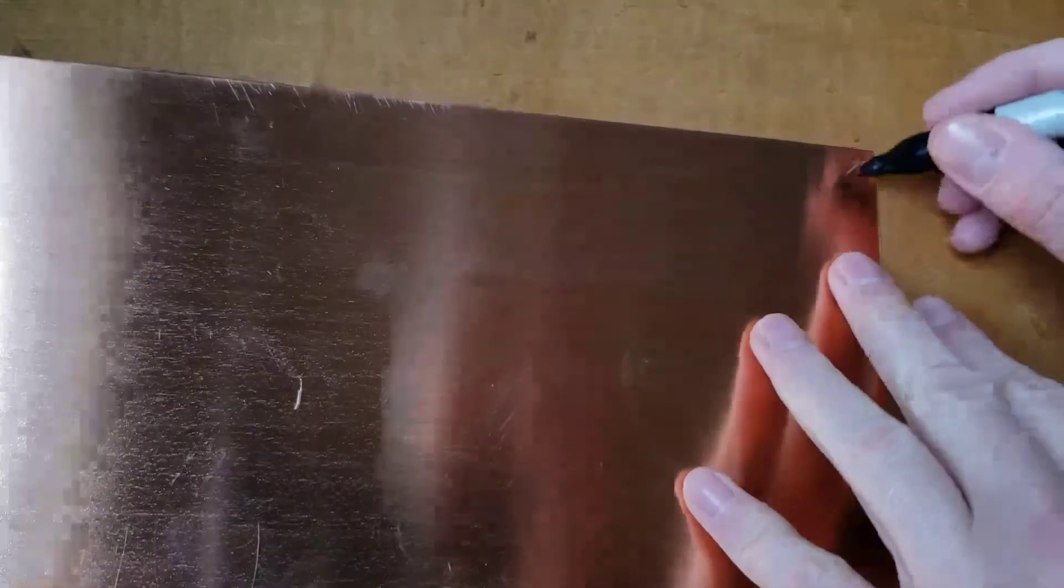The mark is just a small arrow that points to the corner I will register. I scratch the mark into the plate first and then go over it with sharpie.